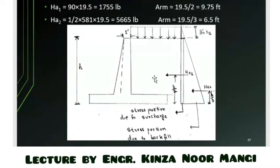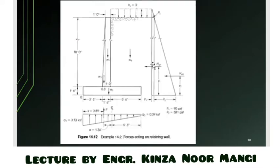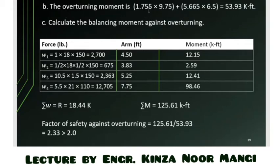The moment arm for the rectangular portion (surcharge) acts at H/2 = 19.5/2 = 9.75 feet from the base. For the triangular portion (backfill), it acts at H/3 = 19.5/3 = 6.5 feet from the base. Multiplying each force by its moment arm and summing gives the total overturning moment = 53.93 kip-ft.